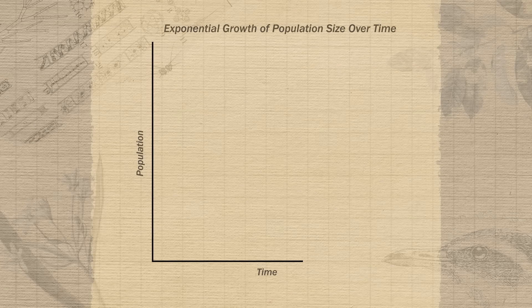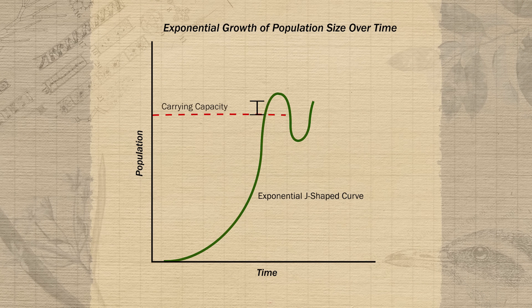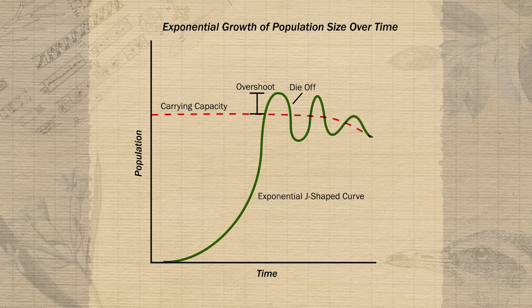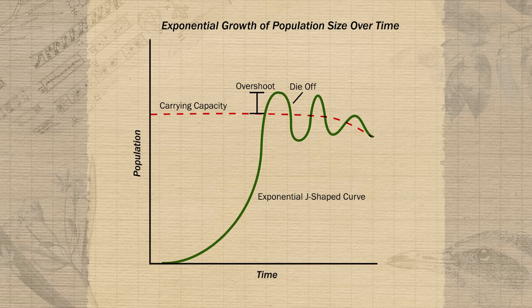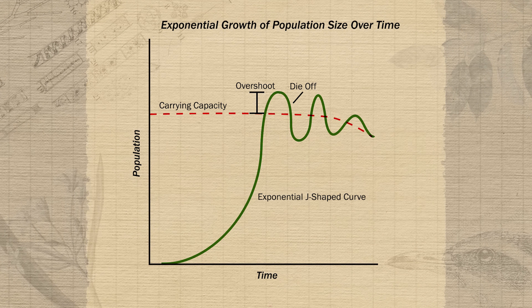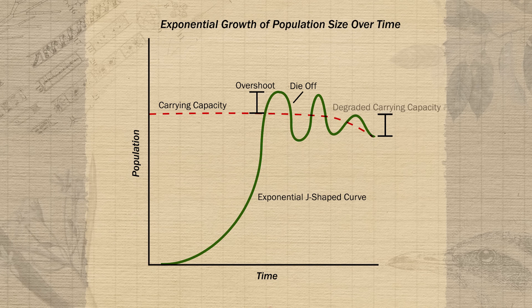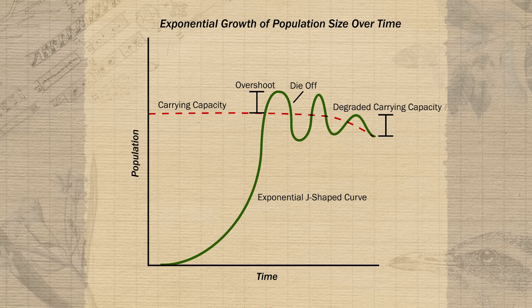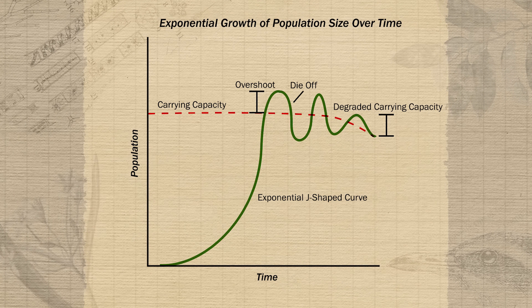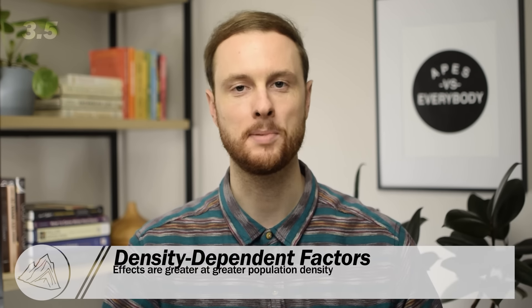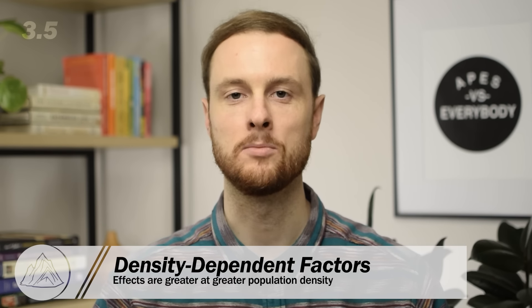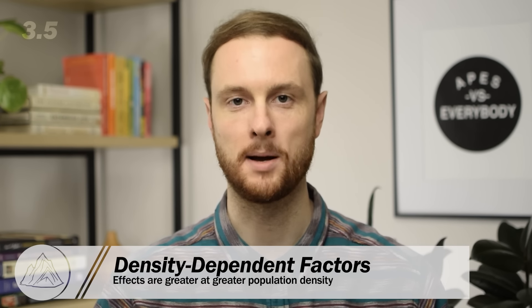In APES, we call this cycle overshoot and die-off or die-back. Sometimes the die-off is really severe because overgrazing during overshoot degrades the plant community or soil nutrients so severely that it also decreases the carrying capacity for plants in the ecosystem. There could also be a disease outbreak that spreads more rapidly because organisms are tightly clustered together. Both of these — competition for resources and disease — are great instances of density-dependent factors that limit population growth, meaning their effects are more pronounced the more densely packed a population gets.